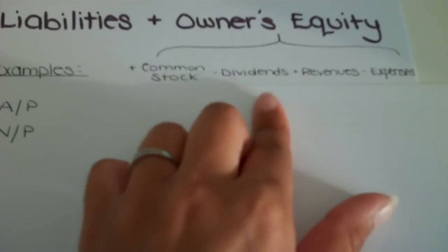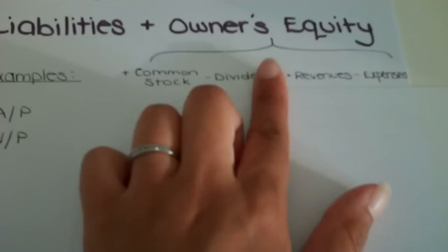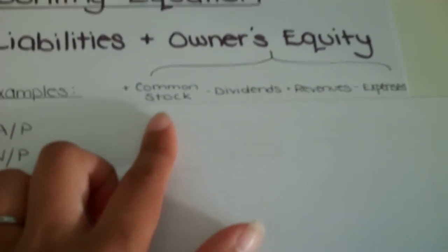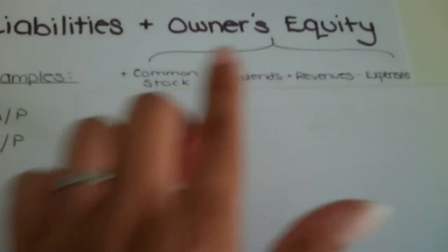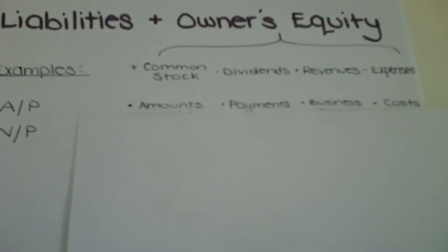All of these items affect an owner's claim on the company's assets. Common stock, also known as contributed capital or capital stock, increases the owner's equity. That's amounts that the owner has invested.